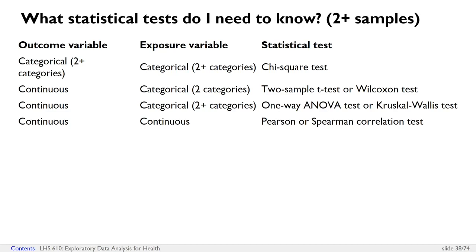If you have two or more samples, in the situation that both your variables are categorical, you'll run a chi-square test. If you have one categorical variable and one continuous variable, but there's only two categories in the categorical variable, this will be a two-sample t-test or a Wilcoxon test.